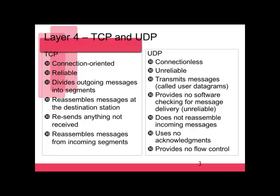With TCP, we divide outgoing messages into segments and reassemble them at the destination. We will resend anything that's not received — if a segment hasn't been received, we resend that data, then reassemble all segments into the whole message. UDP, on the other hand, does not retransmit data if it doesn't make it. There's no error checking, no reassembly of incoming messages, no acknowledgements, and no flow control.